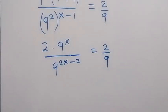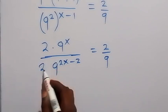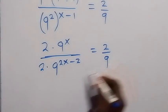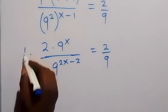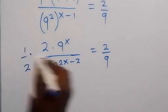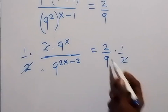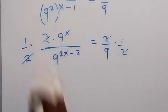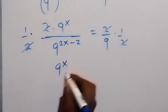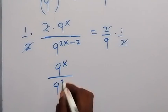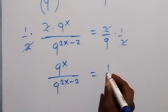From here we can divide both sides by 2 — multiply each side by one half — so the 2s cancel each other. What we are left with is 9 raised to power x divided by 9 raised to power 2x minus 2, which equals to 1 over 9.